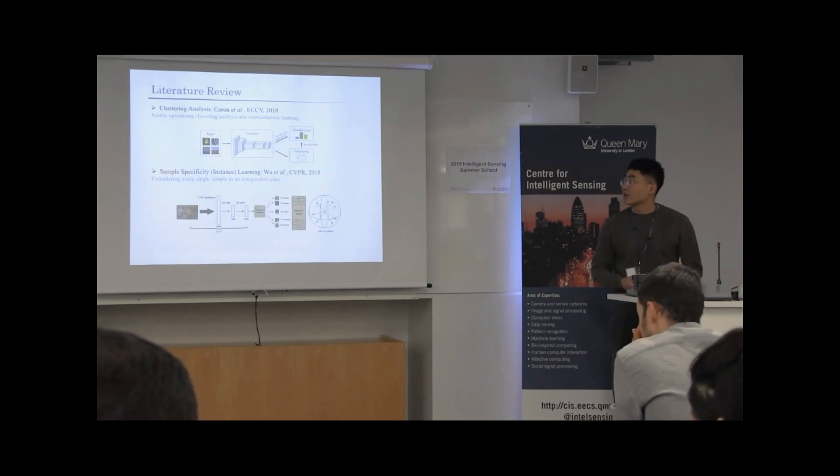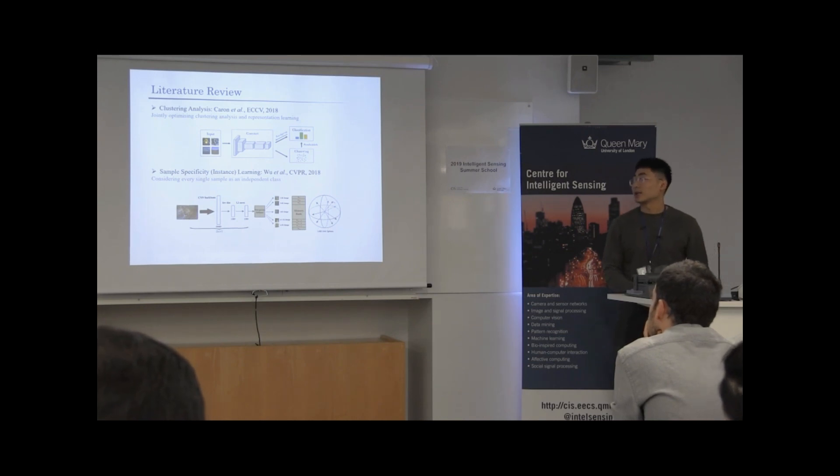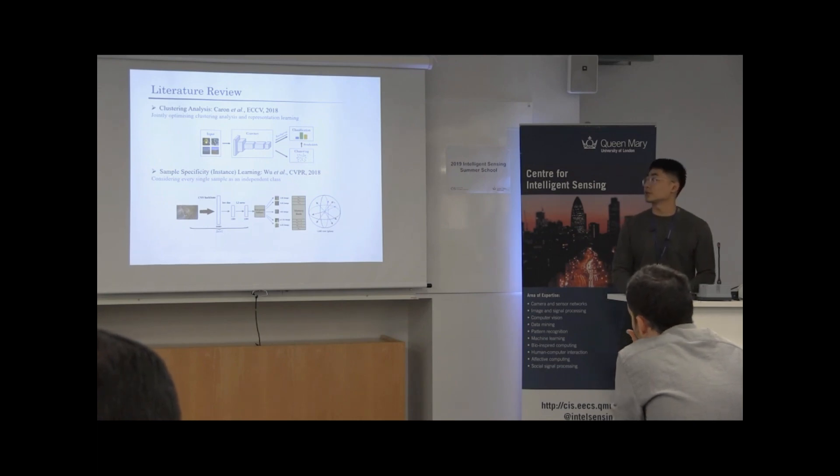The existing study in this field mainly flows into four categories. The first category is the clustering analysis. This type of method jointly optimizes the long-standing clustering task and learns the representation by estimating the assignment of each training sample to the ground-truth categories, and then trains the CNN model in a supervised manner accordingly. The second category is the sample specificity learning, which is also known as the instance learning. This type of method takes each sample as an independent class and trains the CNN to learn the unique information encoded in them, with the assumption that samples from the same semantic classes should share more information than those from different classes.